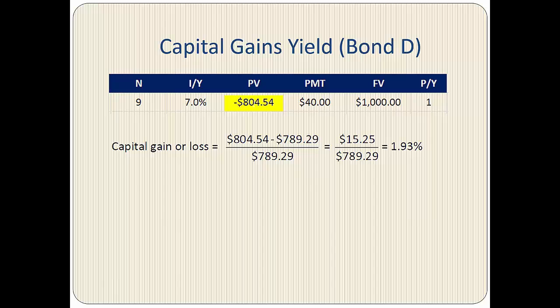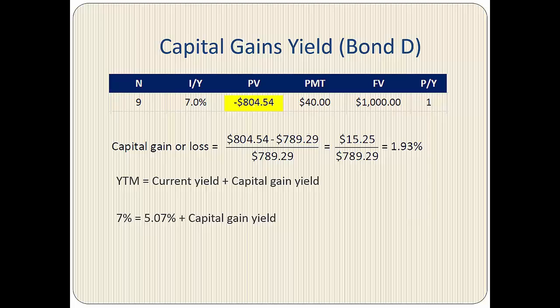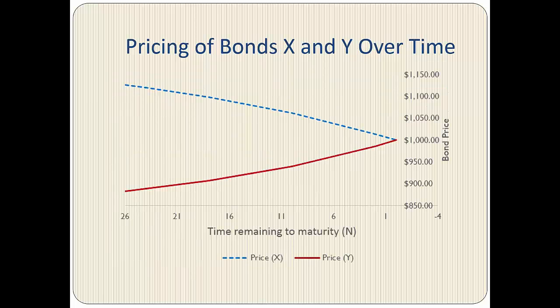Again, we confirm this by equating yield to maturity to current yield plus capital gain yield: 7% equals 5.07% plus capital gain yield; therefore, capital gain yield equals 1.93%. Looking at the lower curve for a discount bond from Part 1 of the video, we can see that the price of a discount bond rises over time if yield to maturity remains the same, giving us a capital gain as opposed to a capital loss.